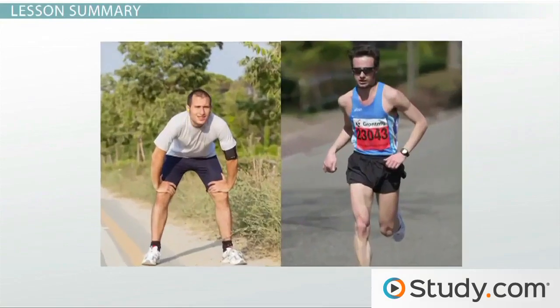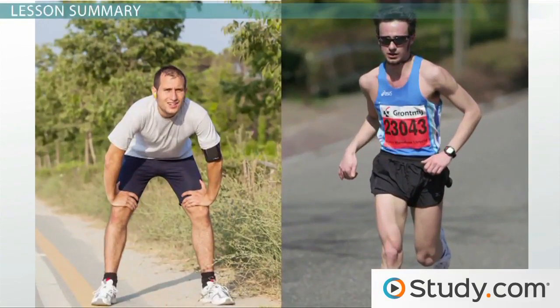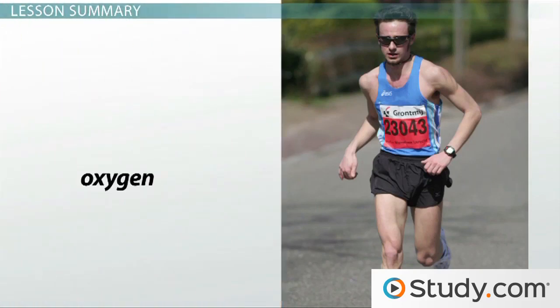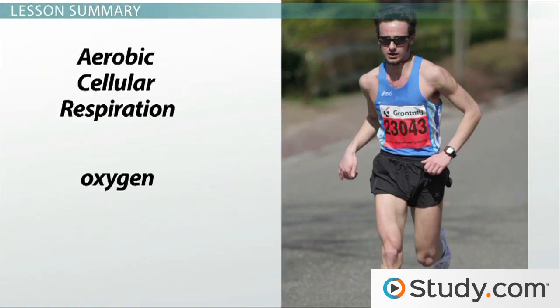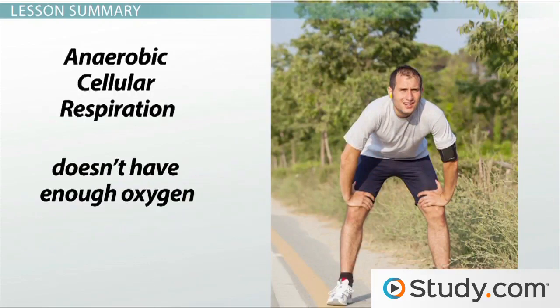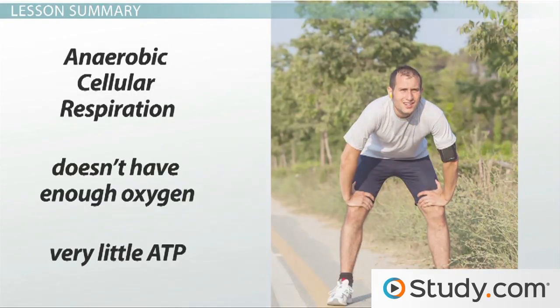In humans, how much charged ATP gets created is a question of whether or not a person has enough oxygen to perform aerobic cellular respiration. When you have plenty of oxygen, your body performs aerobic cellular respiration and makes plenty of ATP. But when you don't have enough oxygen, your cells switch to anaerobic cellular respiration and make very little ATP.